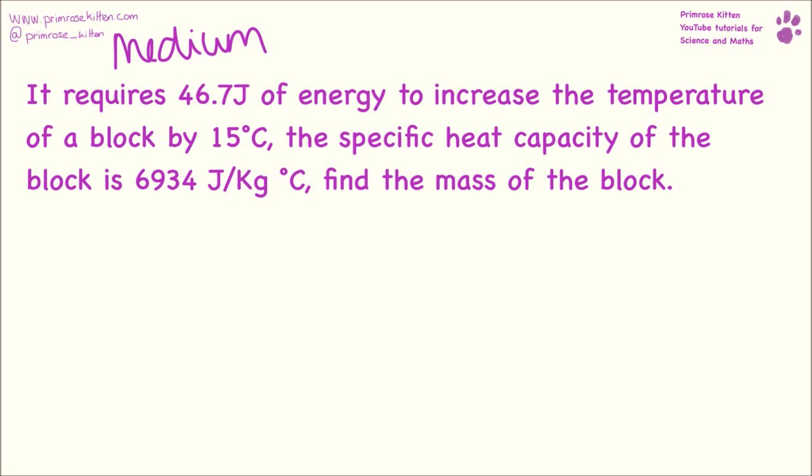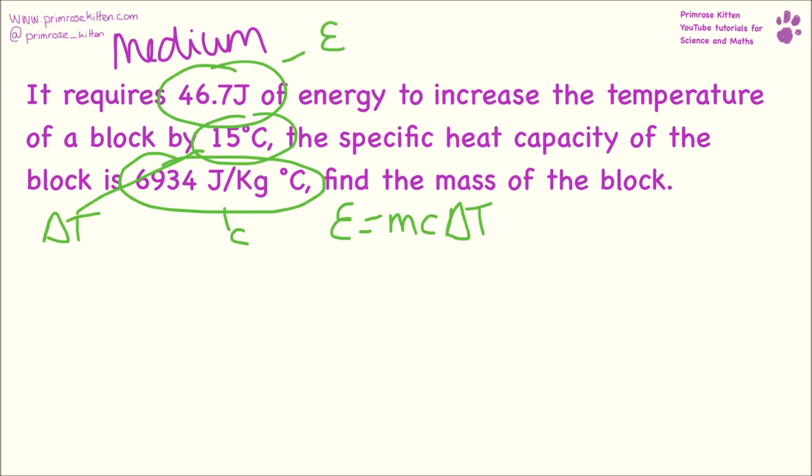Medium questions now. We can expect these to be slightly more complicated, involving rearranging equations and a little bit of the application of logic. It requires 46.7 joules, so that is our energy, to increase the temperature of a block by 15 degrees. So that is delta T. The specific heat capacity of the block is 6934. Find the mass of the block. So we have E equals M C delta T. And it's really important to write down the equation every single time. Even if you're doing 15 of these questions, write down the equation every single time, because then you're getting the habit of writing down the equation, which is something that you really need to do in the exams. Do not take shortcuts. We don't do shortcuts in physics.